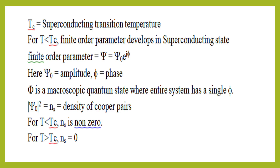In the superconducting state we can define a finite order parameter. It is given by Chi equals Chi-naught times e to the power i-Phi. Here Chi-naught is the amplitude and Phi is the phase. Phi has a single value. Chi-naught squared is equal to Nc, the density of Cooper pairs.